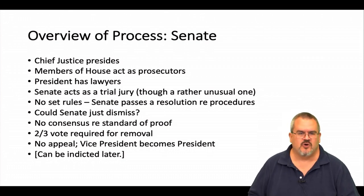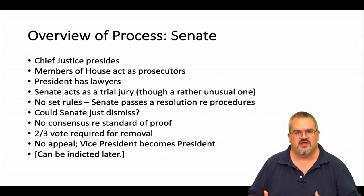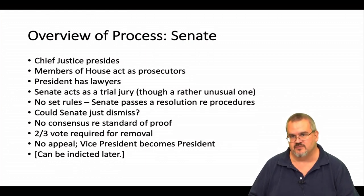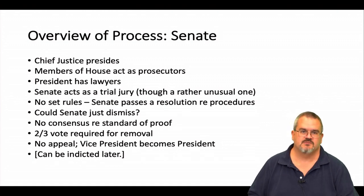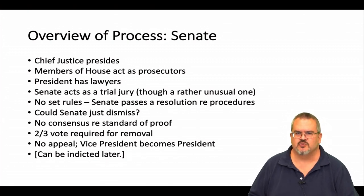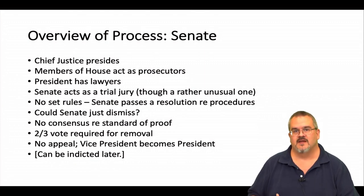One issue that's come up recently is the question of whether the Senate even has to have a trial. Some people have suggested that if the House of Representatives, which is controlled by Democrats, does pass articles of impeachment against President Trump, the Senate, which is controlled by Republicans, might simply dismiss the charges. Does the Constitution allow this option? The answer really isn't clear — it's been debated by scholars. It seems unlikely that this would happen, but it has been raised as a possibility, because the Senate has a lot of power in determining how to conduct a trial once there's been an official impeachment.